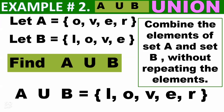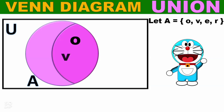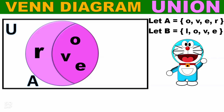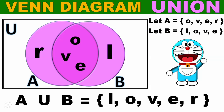Kung ano yung elements na nandoon sa A and B na magkapareho sila, isang beses lang magka-appear doon sa union B. Now using the Venn diagram: set A has O, V, E, R and set B has L, O, V, E. Combining them without repeating, A∪B = {L, O, V, E, R}.